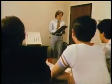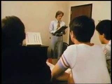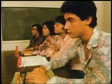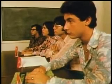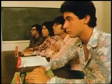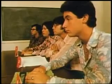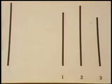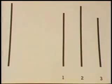Asch found subjects went along with the group on 37% of the critical trials, but he found through interviews that they went along with the group for different reasons. In one case: One. One. One. "They must be right — there are four of them and one of me." This subject's yielding is based on a distortion of his judgment; he genuinely believes that the group is correct.